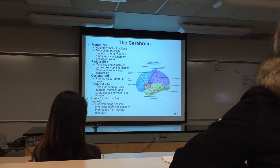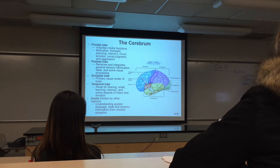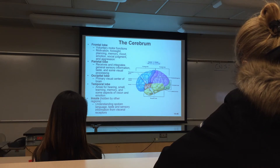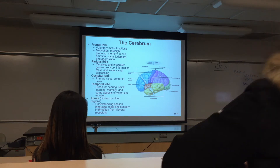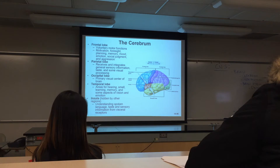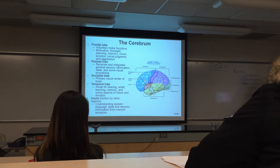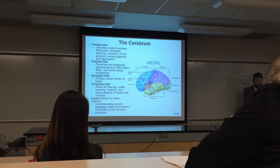The insula is a deep lobe only visible if the temporal lobe is pulled back. The insula and temporal lobe regulate taste, hearing, and speech. If somebody suffers a stroke killing tissue in this region, they'll likely have difficulty speaking. A stroke damaging the occipital region will likely cause visual defects. Patient symptoms can dramatically help physicians pinpoint where the damage is occurring — it's amazing how regionalized brain function is.